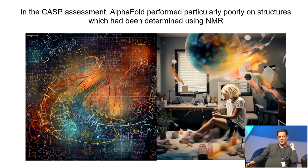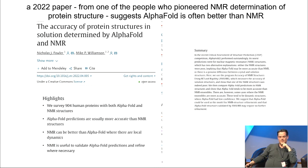In the CASP assessment, AlphaFold performed quite poorly on a few structures, several of which had been determined using NMR. This is one of the three main techniques used. It's relatively uncommon. And a 2022 paper from one of the people who, in fact, did the first NMR determination of protein structure, suggests that AlphaFold is actually often better, significantly better than NMR. They looked at 904 human proteins and they concluded the AlphaFold predictions are usually more accurate than NMR structures. I think that's really quite interesting.